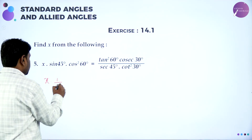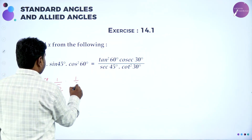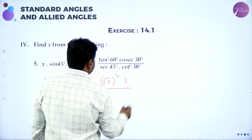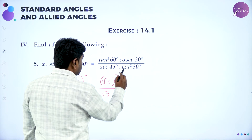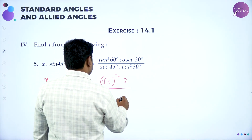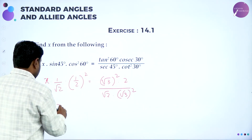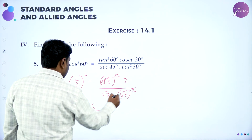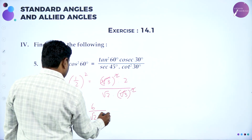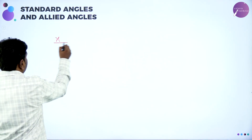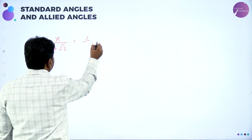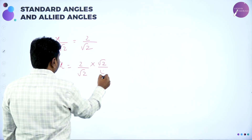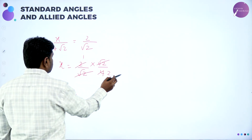Next: x · sin 45 · cos² 60 = tan² 60 · sec 30 · sec 45 · cot² 30. Sin 45 = 1/√2. Cos² 60 = (1/2)² = 1/4. Tan² 60 = (√3)² = 3. Sec 30: cos 30 = √3/2, reciprocal = 2/√3 — that will become 2. Sec 45 = √2. Cot² 30 = (√3)². Simplifying: x/(√2 · 4) = 6/(√2 · 3). Rearranging: x = 2/√2 · √2/4 = 2·√2·√2/4 = 4/4. Wait — root 2 and root 2 cancel, giving x = 2/(2·2) = 1/2. So x = 1/2.